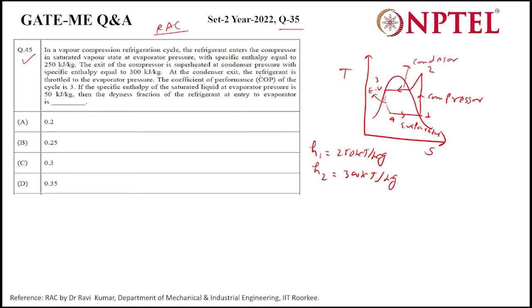At the condenser exit, the refrigerant is throttled, and the COP of the cycle is 3. COP is known as the refrigeration effect upon energy input. Refrigeration effect is the heat absorbed at the evaporator, so it would be h1 minus h4, by the energy input in the compressor, h2 minus h1. From here we know h1.